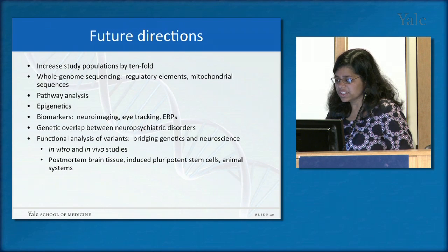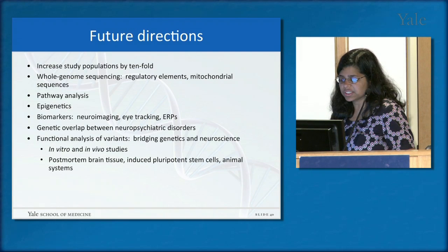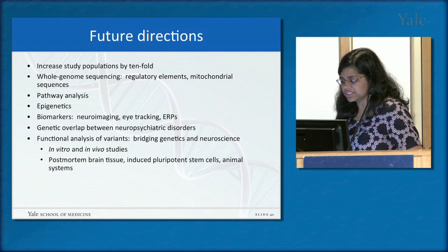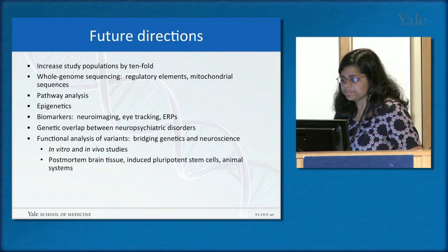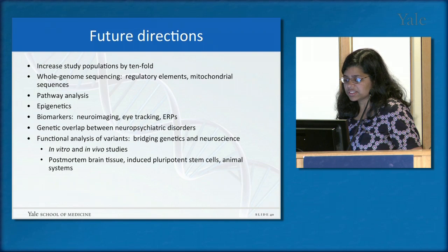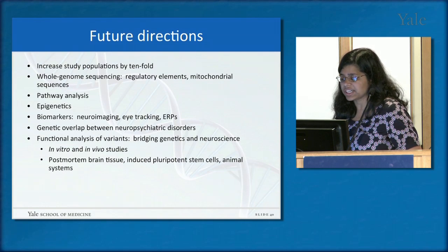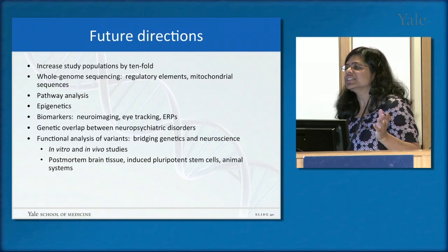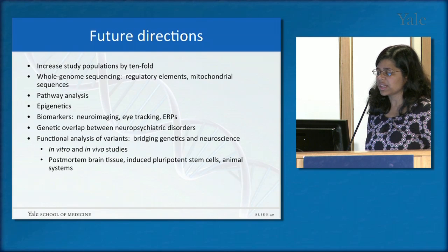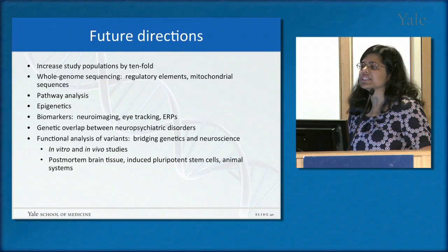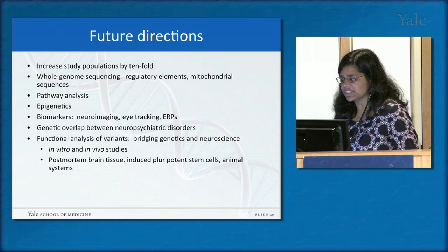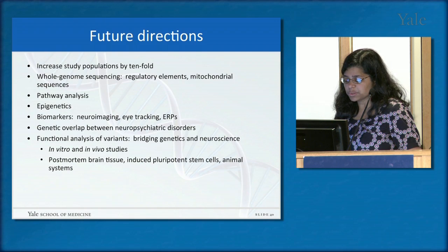Looking for genetic overlap between neuropsychiatric disorders is also important — autism and schizophrenia may shed light on each other through shared genetic elements. Critically, functional analysis of variants is essential: bridging genetics and neuroscience by studying whether mutations really cause damage to protein structure and function, using in vitro and in vivo studies in cell culture and mice, and post-mortem brain tissue work. Induced pluripotent stem cells, or iPSCs, are a hot topic: taking blood cells, reprogramming them into pluripotent stem cells, then into neural cells, to create an in vitro disease model of autism in a dish.